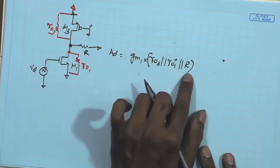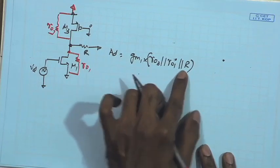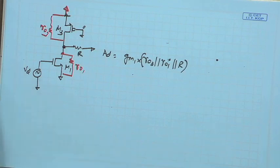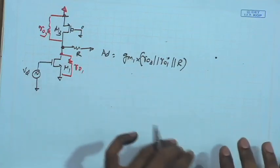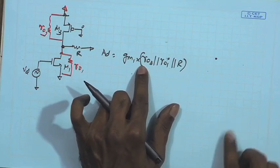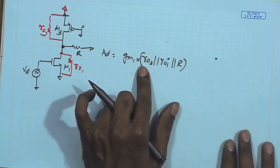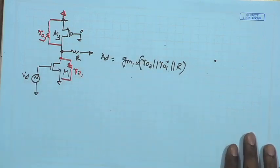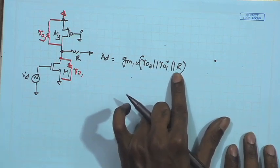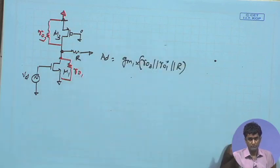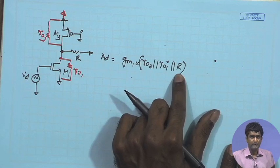To maintain large open-loop gain, R must be significantly larger than r_o3 and r_o1. However, in nanometer technology with bias currents around 10 µA, r_o values can easily reach hundreds of kilo-ohms to 1 MΩ — especially with longer channel lengths required for noise performance. This means the resistive divider value R could range from megaohms to tens of megaohms, which is not practical for integrated circuit design.